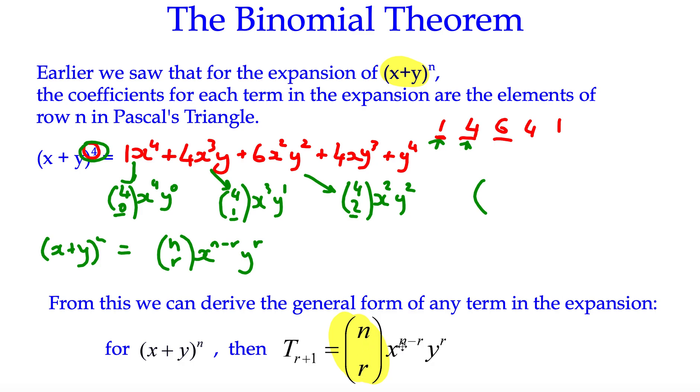The x term at any point is the difference between n and r, and we go through from r from 0 all the way up to n. We take all these individual terms and we have to add them up.